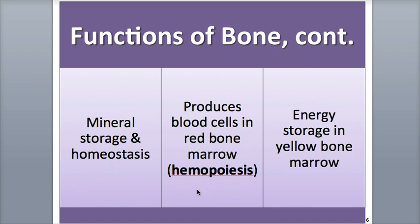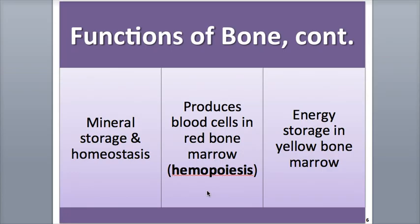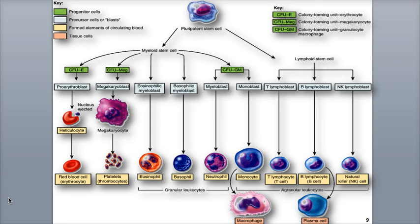A fifth function is blood cell production. Many bones contain red bone marrow, a connective tissue that generates the blood cells of the body, including the red blood cells, the white blood cells, and platelets. These blood cells form through a process called hemopoiesis, which means creation of blood. This flowchart illustrates the process of hemopoiesis beginning with pluripotent stem cells located within the marrow, and we'll explore this in detail later on in the course in Chapter 19 on blood.